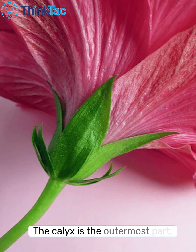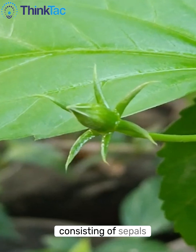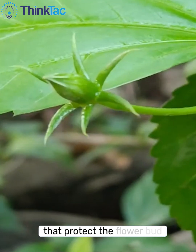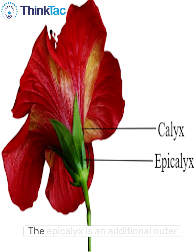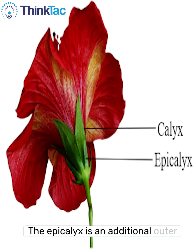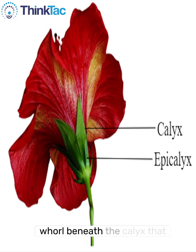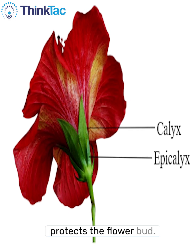The calyx is the outermost part, consisting of sepals that protect the flower bud before it opens. The epicalyx is an additional outer whorl beneath the calyx that also protects the flower bud.